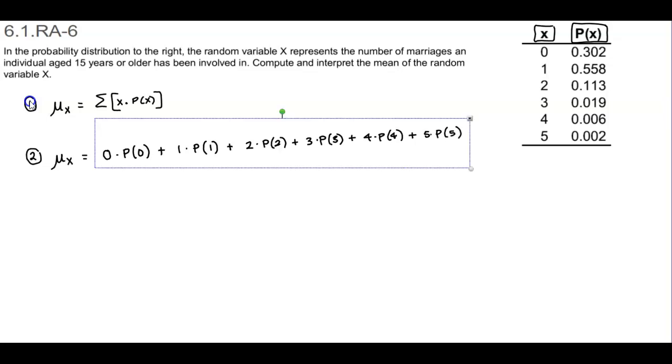This is going to be 0 times the probability of 0, which is 0.302. Plus, we take 1 and multiply that by 0.558. Plus 2 times the probability of 2, which is 0.113.